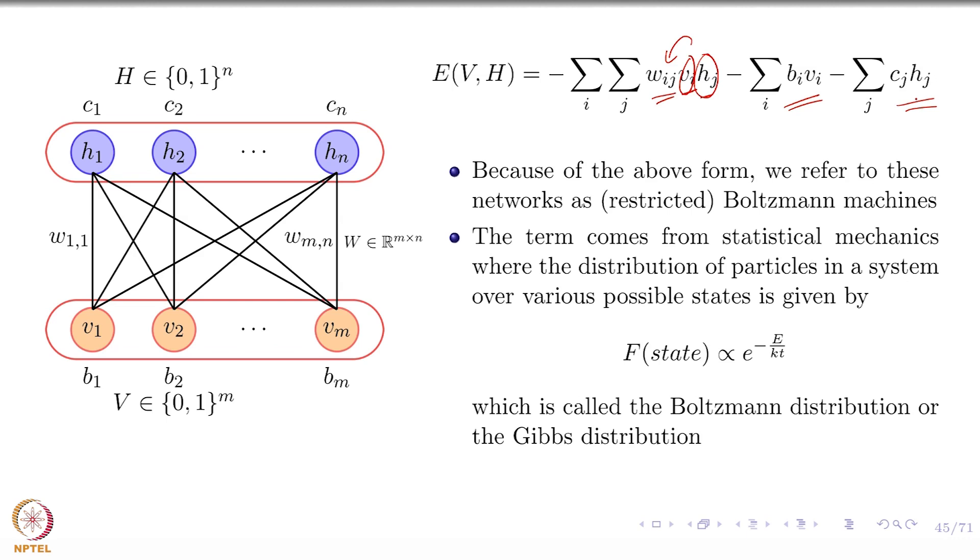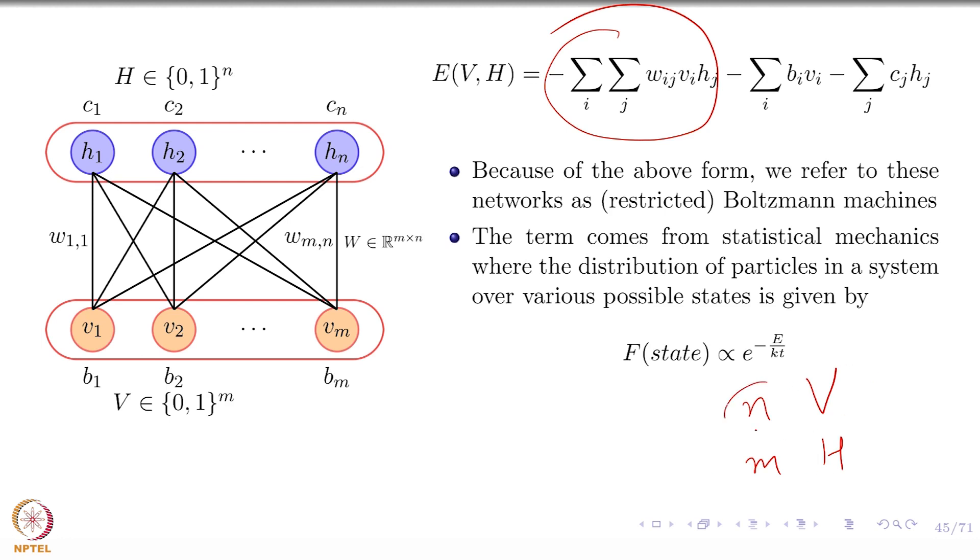If I pick one visible variable, how many terms in this summation correspond to that? Remember this is a double summation. Assume there are n visible variables and m hidden variables. My question is, if I take one of these guys, m of those. And what about this? How many terms in this summation correspond to? One. So there are m terms here corresponding to each visible variable that we have. There are m visible variables and n hidden variables. So that means if I repeat my question, how many terms in the summation correspond to this? n, okay fine.